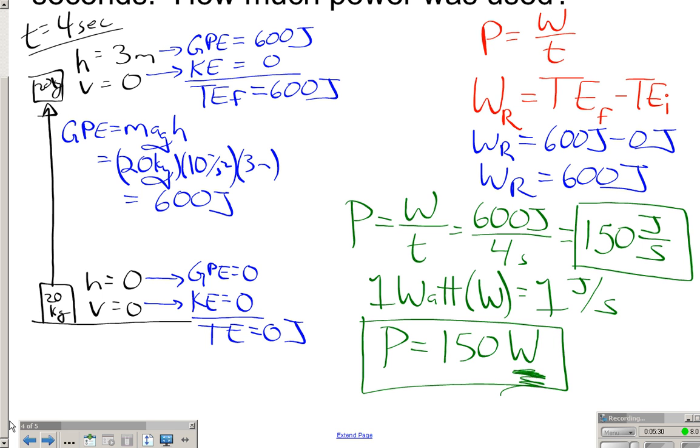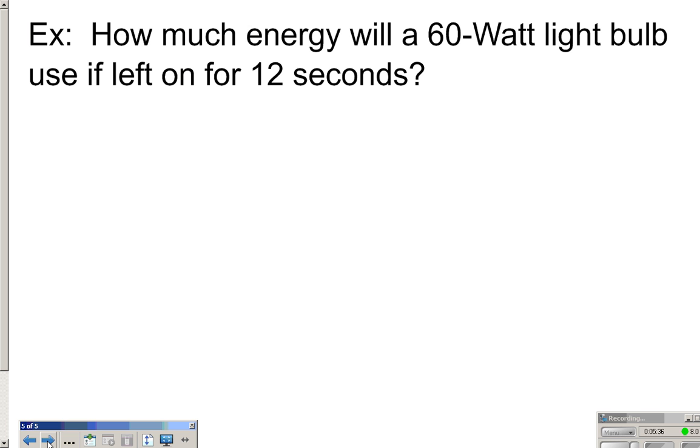So let's do a light bulb example. Here we go. It's going to be awesome. How much energy does a 60 watt light bulb use if it's left on for 12 seconds? Well, let's start by writing down what we know. 60 watts. Well, that's a measure of power. So the power that our light bulb is using is 60 watts. It's going to be left on for 12 seconds. I'm going to figure out how much energy it uses, how much work is needed to power it. Remember, work and energy are both measured in joules, so we're looking for the work.